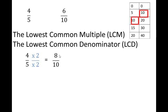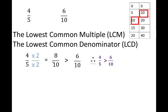Now that I know 4 fifths can be written as 8 tenths and my denominator is now 10, I need to look at the second fraction: 6 tenths. Now, 6 tenths already has a denominator of 10. The denominator in both fractions are now the same — 10. So I don't need to find any equivalent fraction to 6 tenths; I simply leave 6 tenths as it is. Now that our denominators are the same, we concentrate on the numerators 8 and 6. 8 is a bigger number than 6, therefore 8 tenths is greater than 6 tenths. This also means that since 8 tenths is the equivalent of 4 fifths, 4 fifths is also greater than 6 tenths.